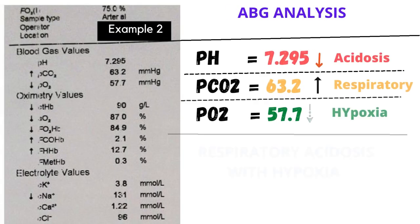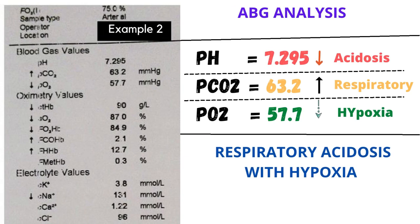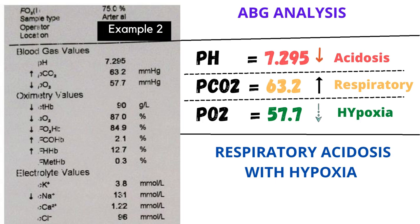Now look at this ABG. Here pH is less than 7.35, which means it's acidosis. The CO2 levels are higher, meaning respiratory, and PaO2 is 57, which means hypoxia. So the final interpretation will be respiratory acidosis.